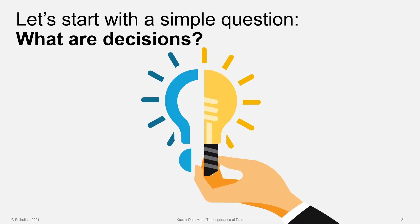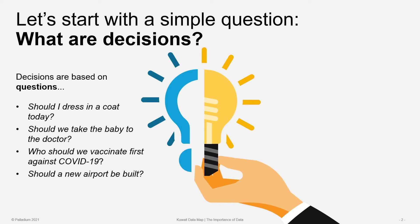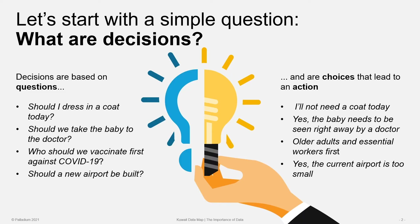Let's start by talking about decisions. We make decisions all the time: how should I dress today, should I wear a coat, should we take the baby to the doctor, who should we vaccinate first for COVID-19, do we need a new airport? All these decisions have a couple things in common. One is that some action is required — taking the baby to the doctor, putting on or not putting on a coat, vaccinating certain subgroups of the population, or investing or not investing in a new airport. But they also have something else in common, and that's data, which can be used to help make the decision.